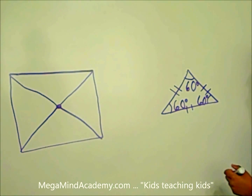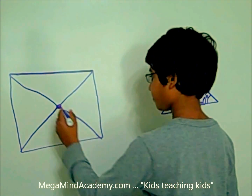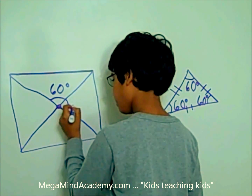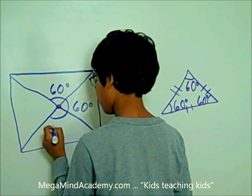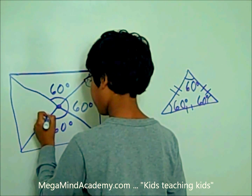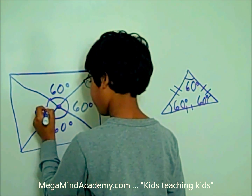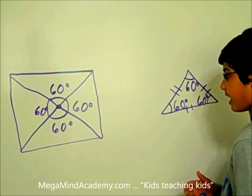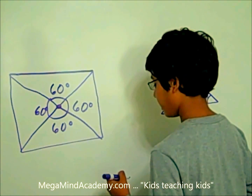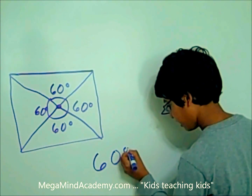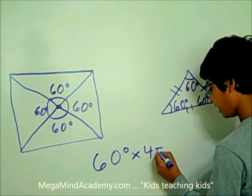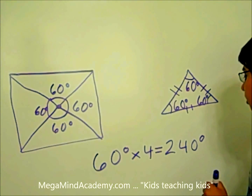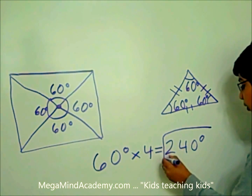So let's find the total angle at the vertex. That's 60 degrees for this face, 60 degrees for this face, 60 degrees for this face, and 60 degrees for this face. The total angle at the vertex is 60 degrees times 4, which equals 240 degrees.